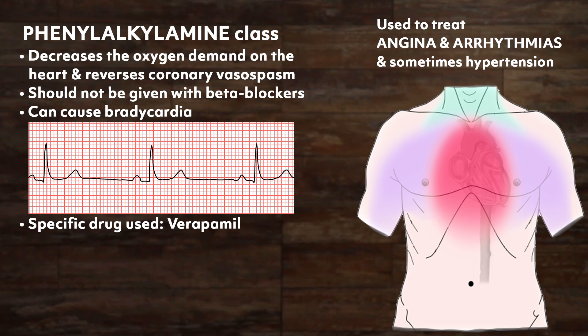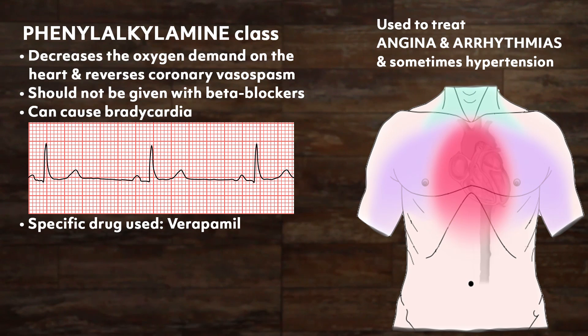The phenylalkylamine class of drugs are a non-dihydropyridine that decreases the oxygen demand on the heart and reverses coronary vasospasm — the sudden, intense constriction of a coronary artery that can occlude the vessel. They are used to treat angina and arrhythmias. They cause less vasodilation, so less tachycardia, but can actually cause excessive bradycardia, impaired electrical conduction, and depressed contractility as side effects. Patients with any of these issues should not take non-dihydropyridine calcium channel blockers.